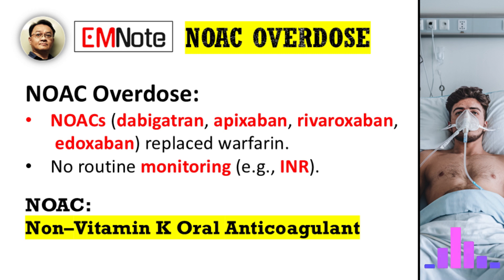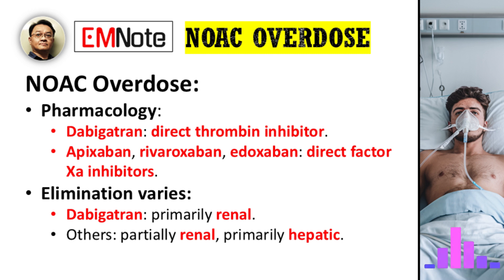That's an excellent place to start, James. The primary challenge stems from their inherent properties. Unlike warfarin, NOACs do not require routine monitoring with tests like the INR. This means we often lack a baseline to assess the degree of anticoagulation. From a pharmacological standpoint, dabigatran is a direct thrombin inhibitor, whereas apixaban, rivaroxaban, and edoxaban are direct factor Xa inhibitors. While they have a predictable effect and relatively short half-lives, their elimination varies. Dabigatran is primarily renal, while the others are partially renal and primarily hepatic. This differentiation is critical for management.